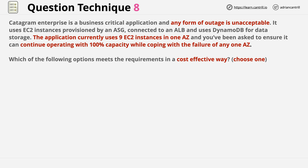Any form of outage is unacceptable — that's the first thing that jumps out of the question text. The question tells us that the application uses 9 EC2 instances in one availability zone, and you can safely assume that this is the minimum operational level for the application. The key part is that the scenario requires a solution which can continue operating at 100% capacity, which is 9 EC2 instances, while coping with the failure of one availability zone, and it needs to do so in a cost-effective way. There might be multiple correct answers, but you have to choose the most cost-effective one.